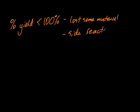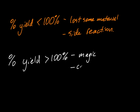So what if my percent yields less than 100%? Well, you've probably lost some of the chemicals, reactants or products. Or there are side reactions, other chemical reactions going on that you didn't account for. And if your yield is greater than 100%, that's magic. Or your product is contaminated. Probably you didn't dry it properly or something like that.